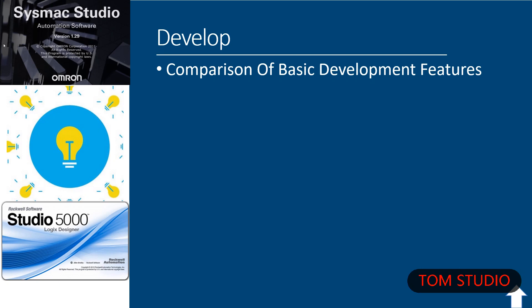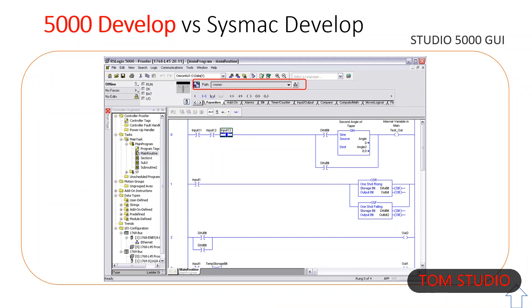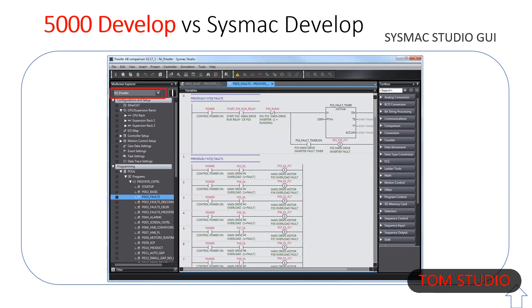The main thing Logix has different is the Browse function and path shown with the red box — this is the RSLinx active utility. In Sysmac Studio, you can have multiple controllers in the project, as well as HMI, safety, vision, and more.